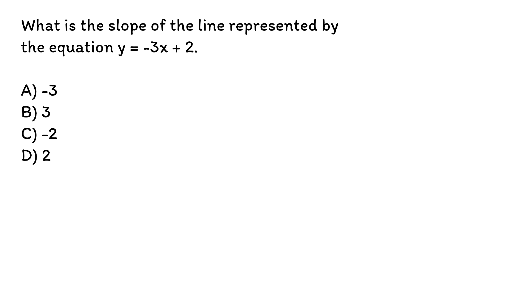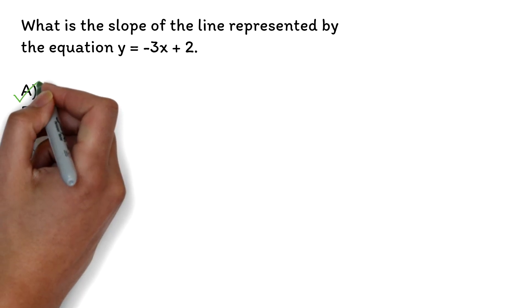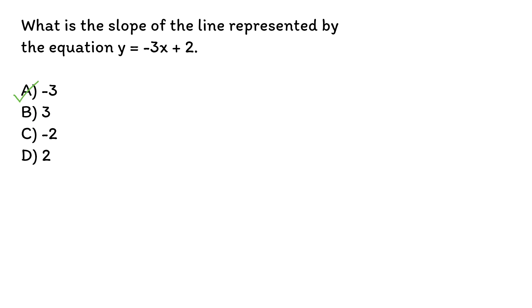What is the slope of the line represented by the equation y equals negative 3x plus 2? A. Negative 3, B. 3, C. Negative 2, D. 2. The correct answer is A, negative 3. This is one of the easiest slope questions you'll find on the GED.